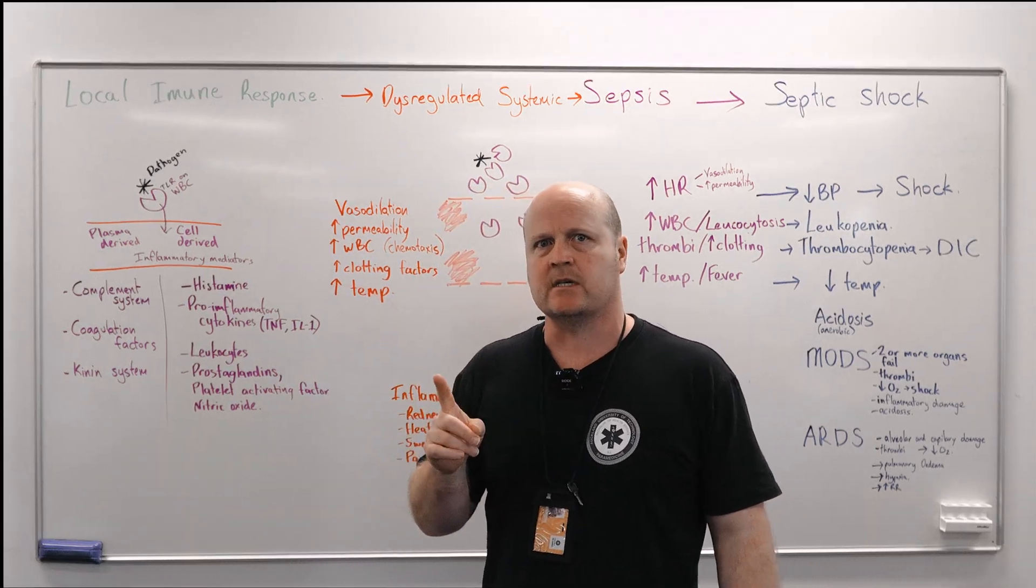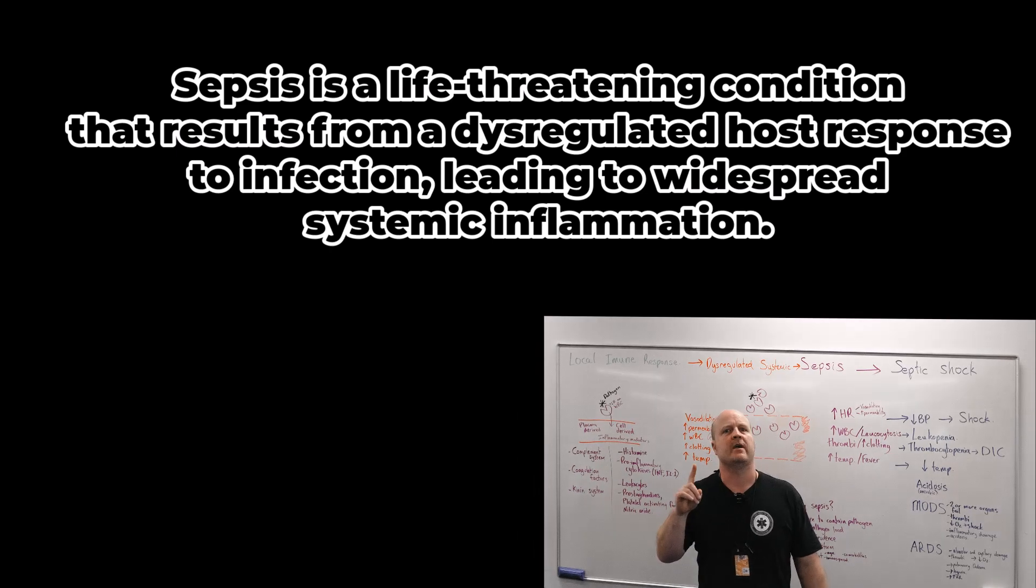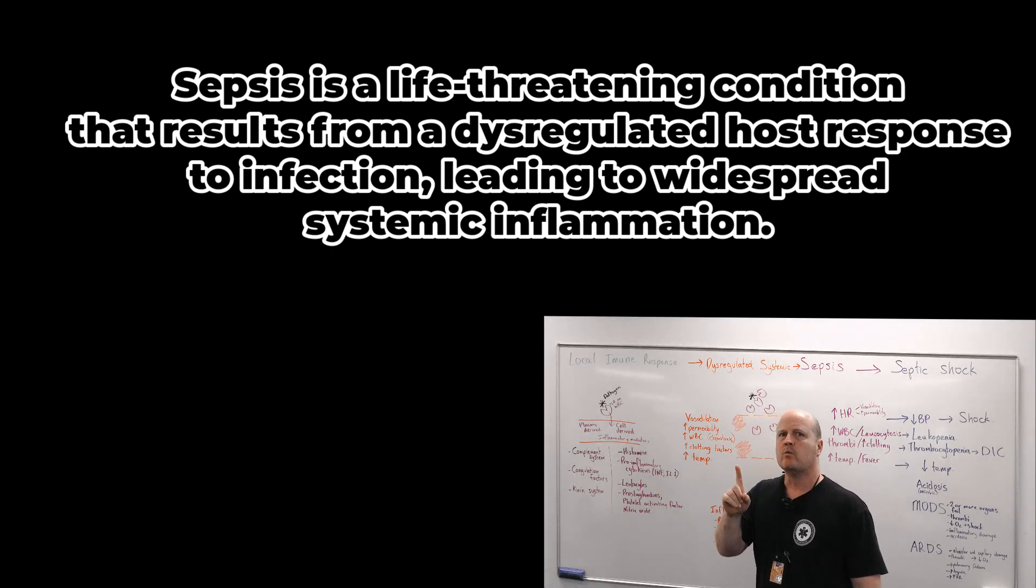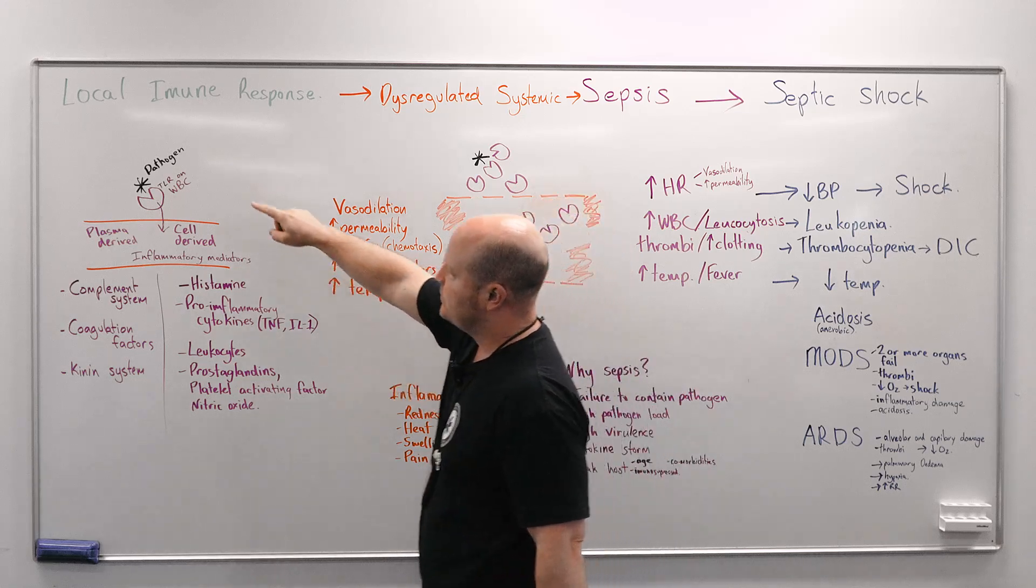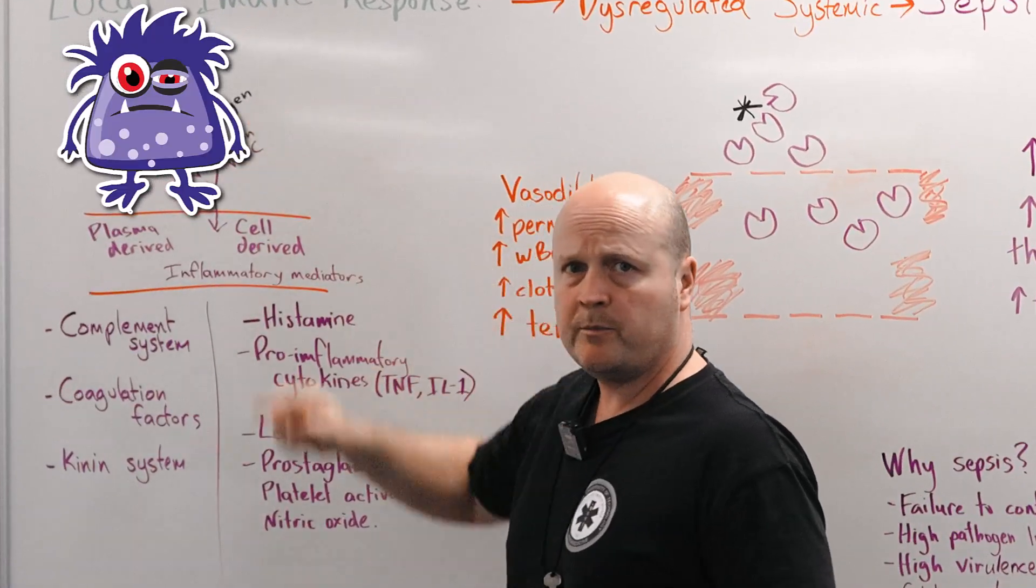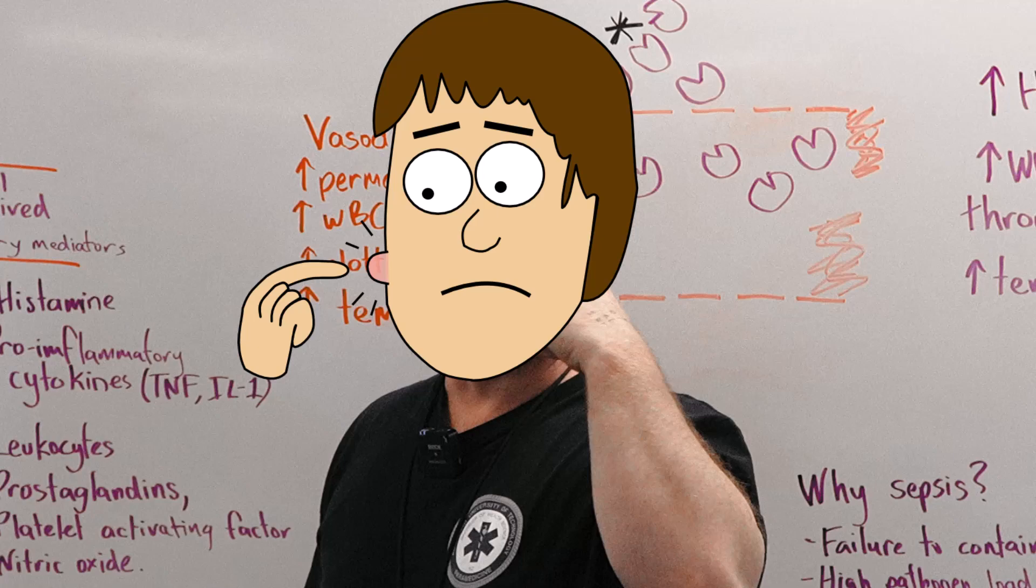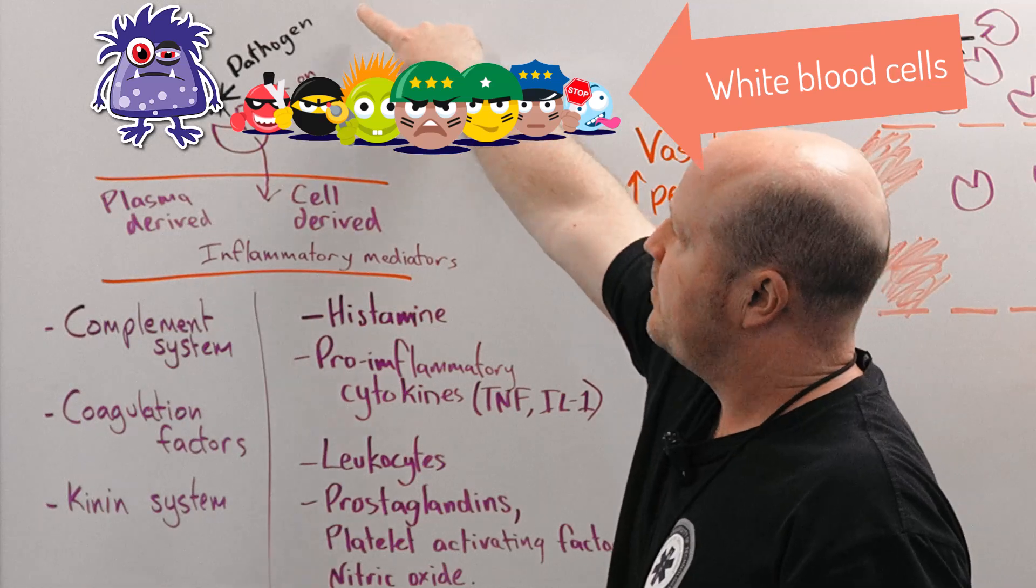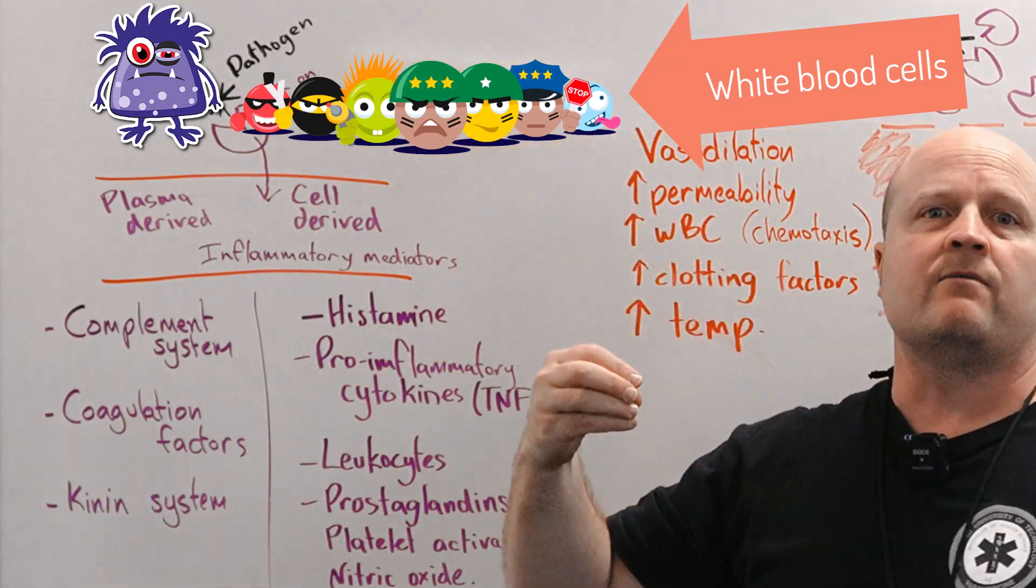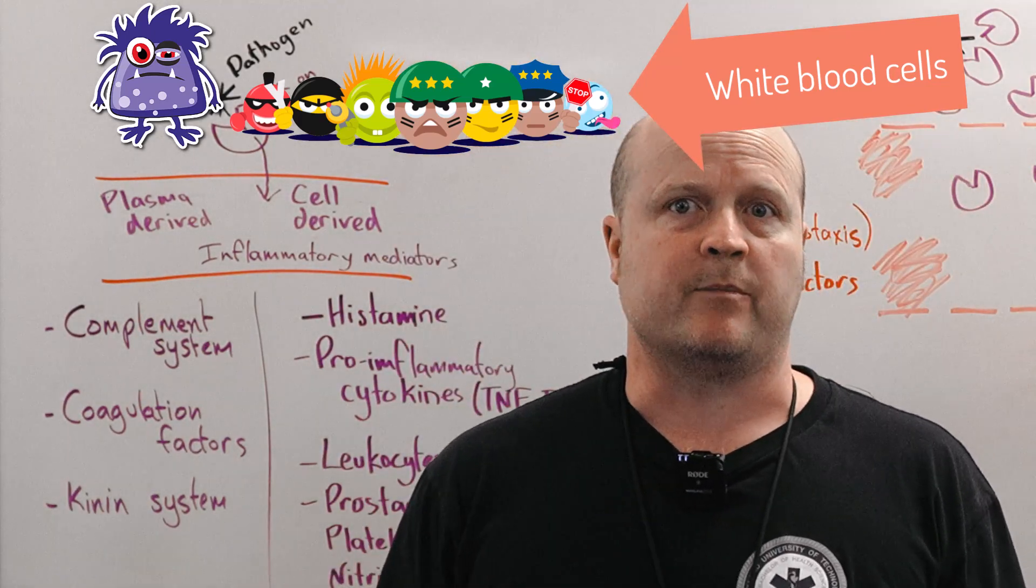So what is sepsis? Sepsis is when we get a dysregulated host response to a pathogen. So let's start with a local immune response. What happens is we get a pathogen, it could be a zit, and we get toll-like receptors on white blood cells that sense the pathogen and then they form a response to deal with the baddie.